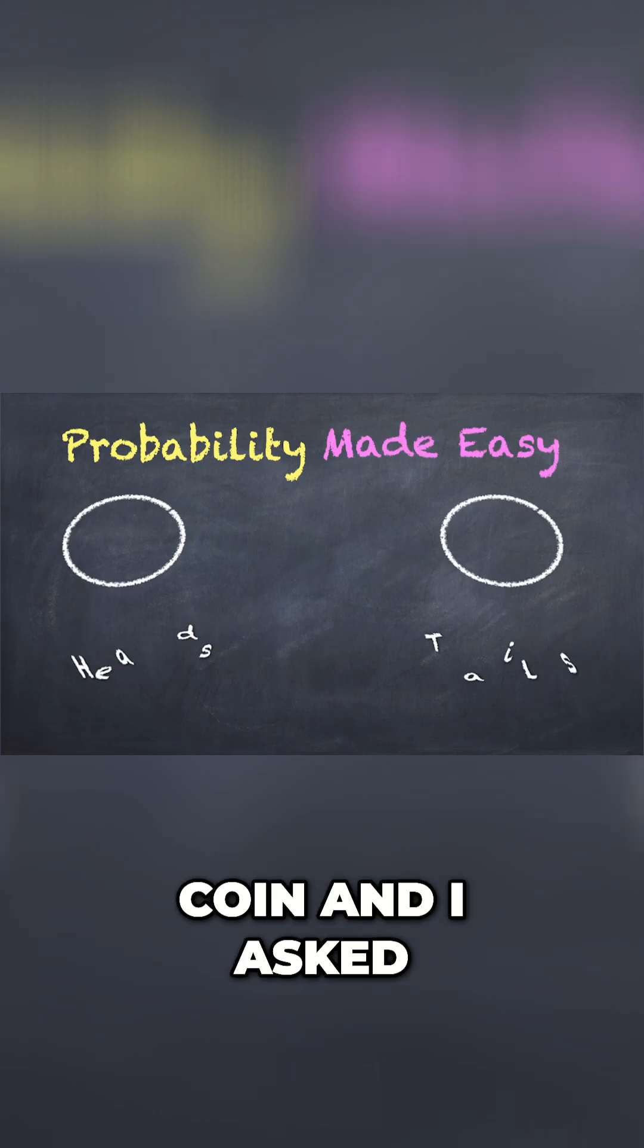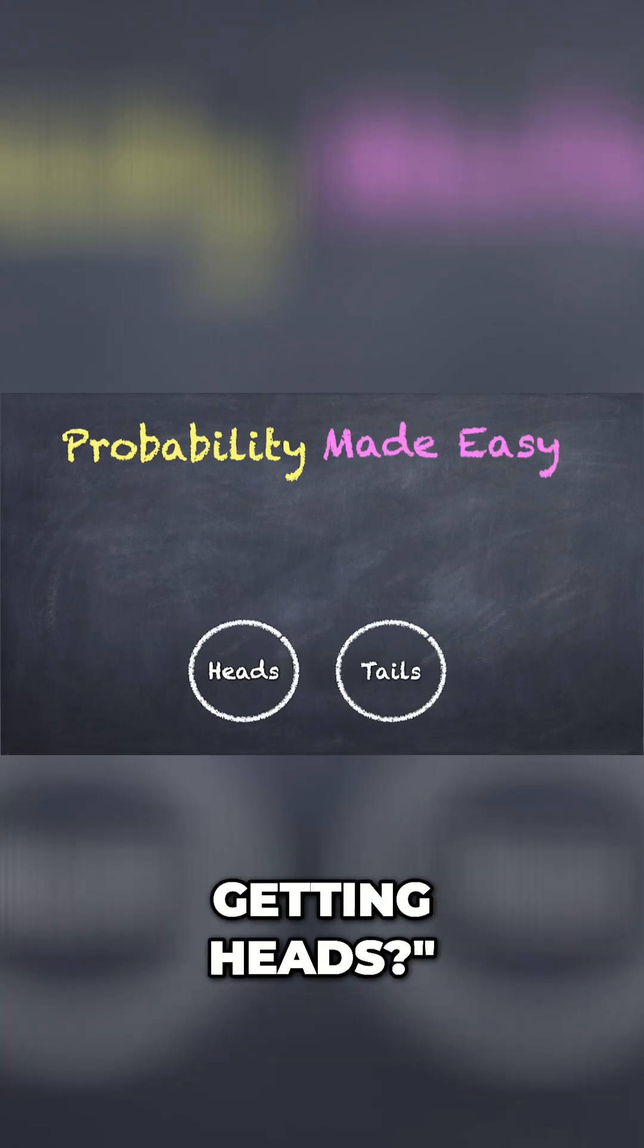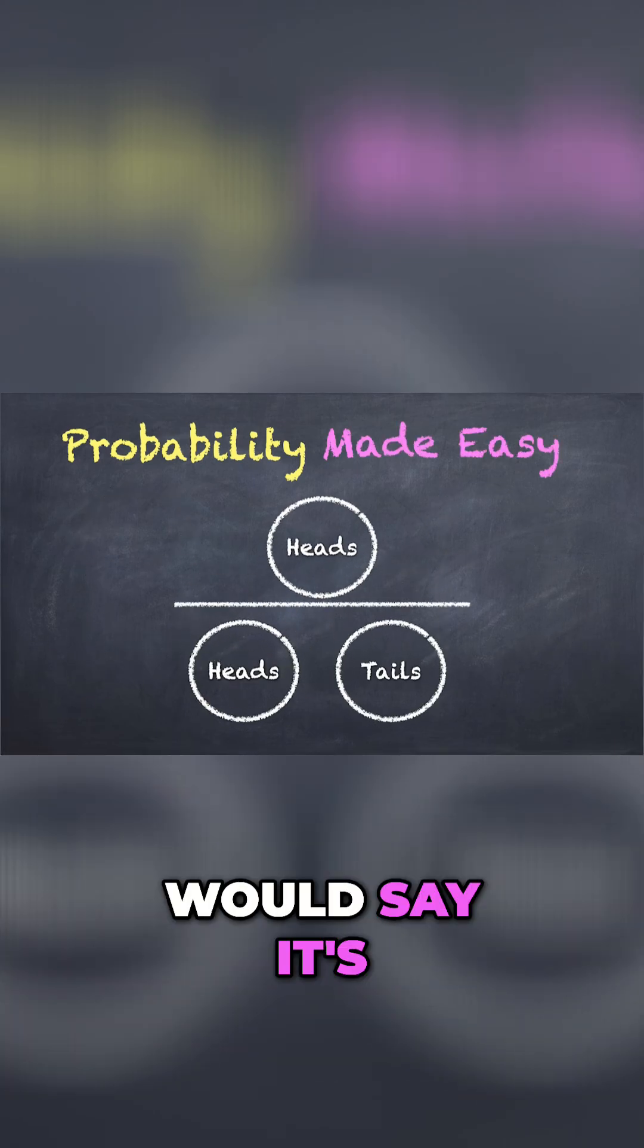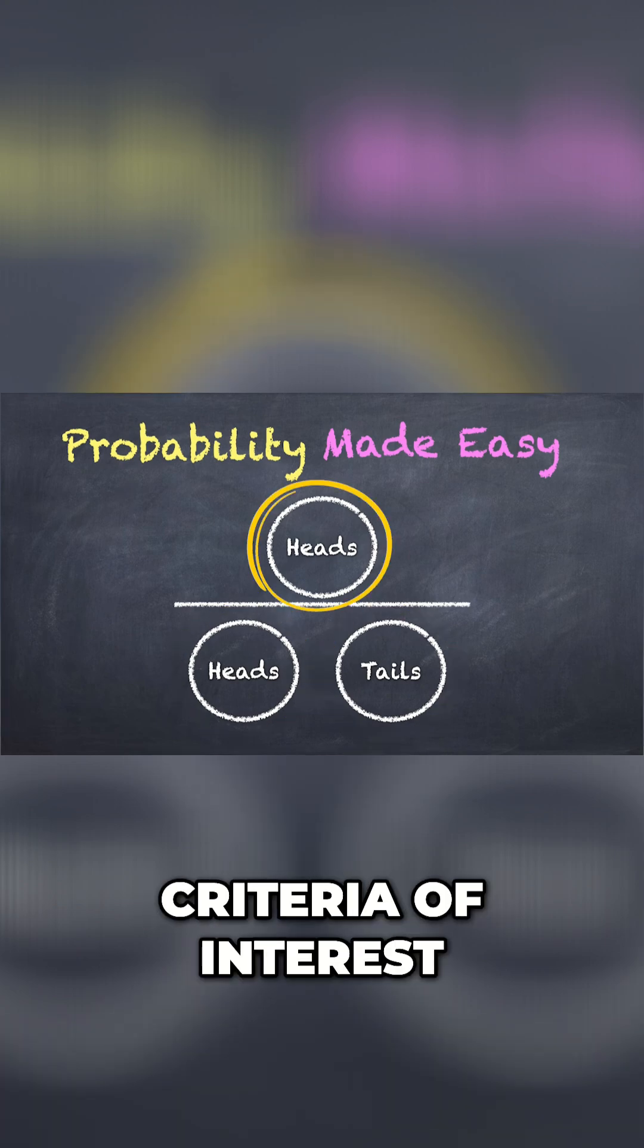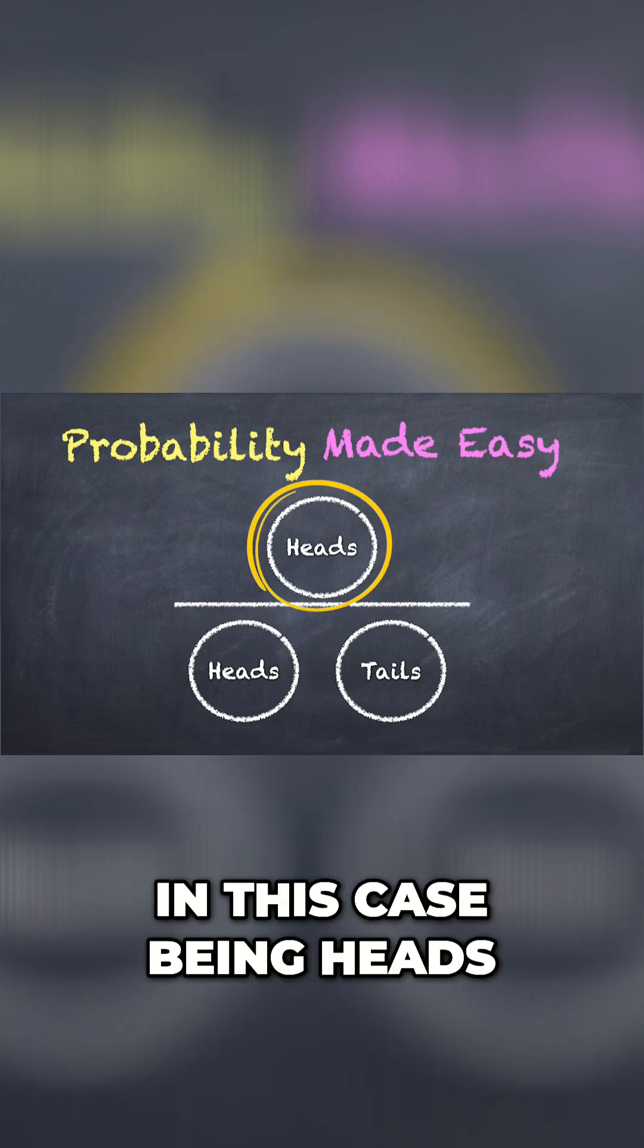If I were to flip a coin and asked you what are the chances of getting heads, you would say it's 50%, because of the two equally likely possible events, there's only one that meets the criteria of interest, in this case, being heads.